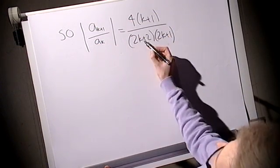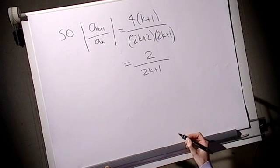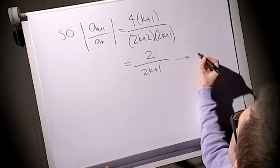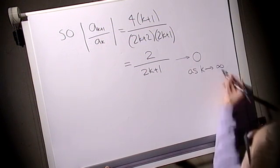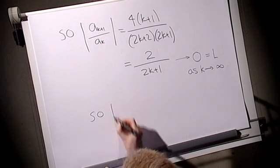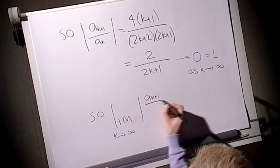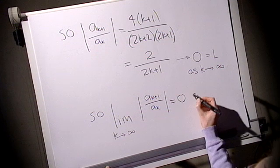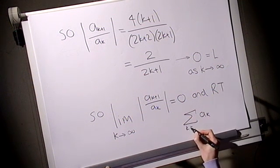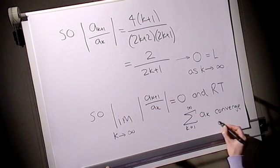Some of you may notice, this is just twice this, so we're actually looking at 2 over 2k plus 1. So, we're interested in the limit of this fraction as k tends to infinity, and this tends to 0 as k tends to infinity. This is going to be our l. So, the limit of k tends to infinity of a_{k+1} over a_k is equal to 0. And by the ratio test, this infinite sum of the a_k's will converge. Because l=0 was less than 1.